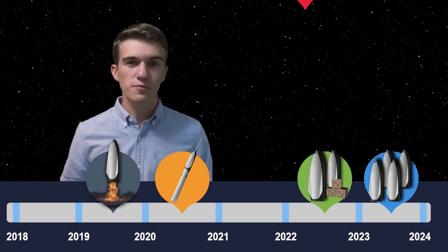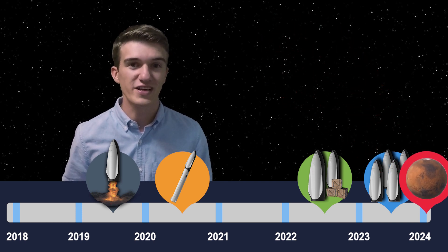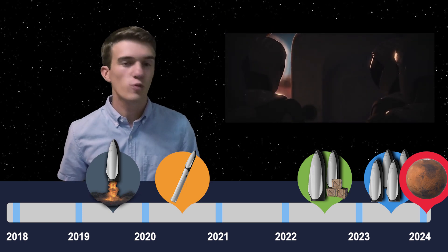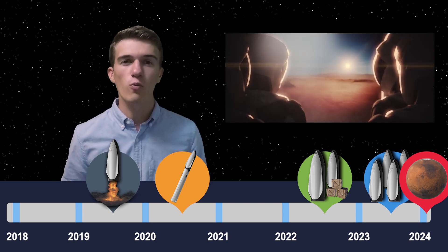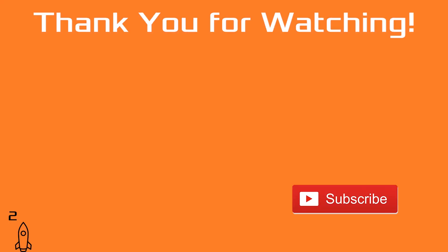Now if everything goes according to plan for SpaceX, the very first humans could be landing on Mars in just six years from now. Now if you'd like to learn more about this, watch the full length video where I talk about whether or not this timeline is achievable, and what SpaceX in the past has planned to go to Mars. Thank you for watching, and I hope to see you in the next one.